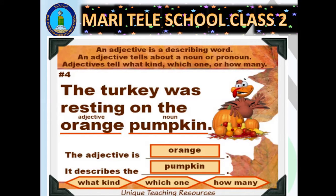In the bottom of the screen, you can see the questions: what kind, which one, and how many. We just talked about colors being adjectives. Numbers are also adjectives — one, two, three, four. 'I have three shirts,' 'I have four balloons.' Numbers are also adjectives. I hope it's quite clear to you so far.